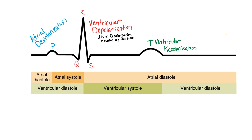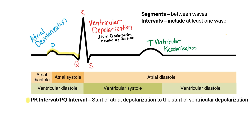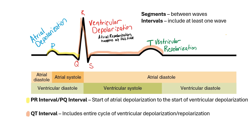In a clinical setting, you might hear reference made to segments and intervals. Segments are parts of the ECG between waves; intervals always include at least one wave — think 'interval I for includes a wave.' The PR interval includes the P wave, spanning from the start of atrial depolarization to the start of ventricular depolarization. The QT interval includes both the QRS complex and the T wave, capturing the entire cycle of ventricular depolarization and repolarization.